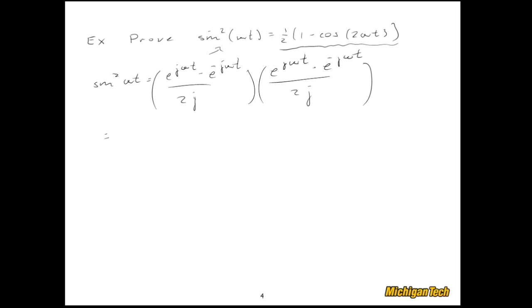So if I multiply things out, let's do the denominator first. I will get negative one-fourth from the denominator. Now let's focus on the numerator: e to the j omega t times e to the j omega t, so that's e to the 2j omega t. If I do the outside terms, I'll have e to the j omega t times e to the negative j omega t with a negative sign in front of it, so I'll get e to the 0 with a negative sign. If I do the inside terms, I'll get another negative one. Finally, the last term I'll get a plus e to the negative 2j omega t.